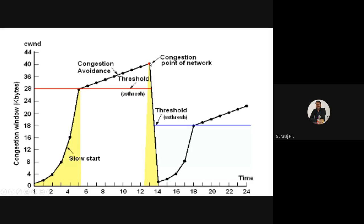At a certain point, when a packet is lost in the network, the congestion window value becomes zero. Once it becomes zero, for the next iteration the threshold value will be half of the previous threshold value. So if the congestion window was around 41-42, it dips to half. Then in the next iteration, it undergoes exponential growth again up to the new half threshold, then linear growth. This phase is called the Congestion Recovery phase.